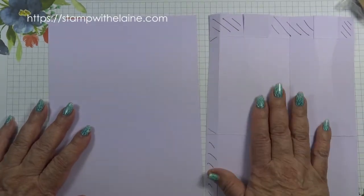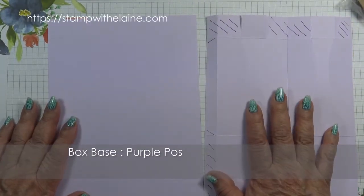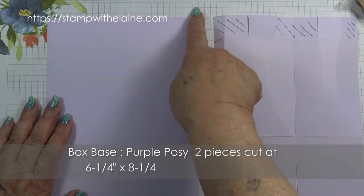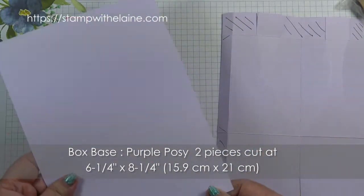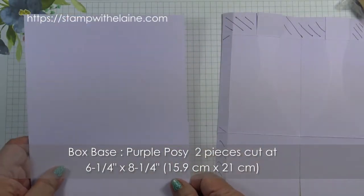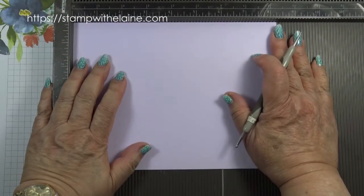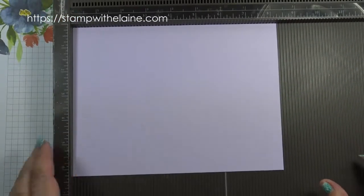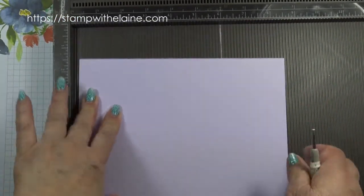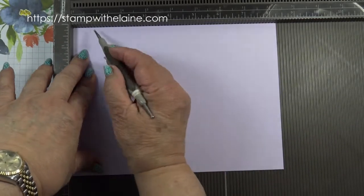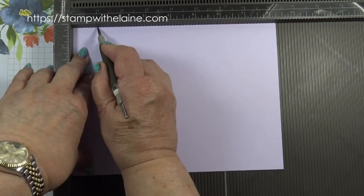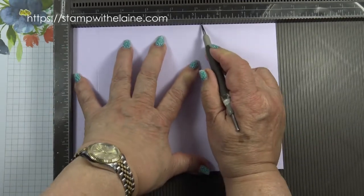To make the box, you need two pieces of cardstock 6 1/4 by 8 1/4, and that's 16 centimeters by 21 centimeters. You need both your trimmer and your scoreboard. To start with, with the long side at the top, you score at 1 inch and 5 1/4 inches.